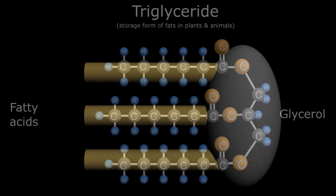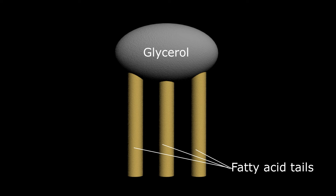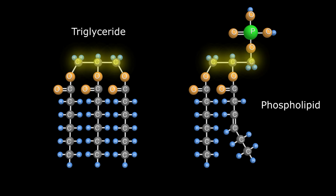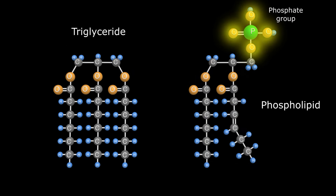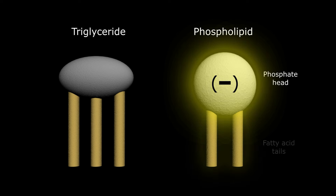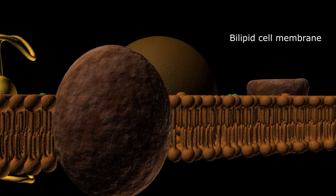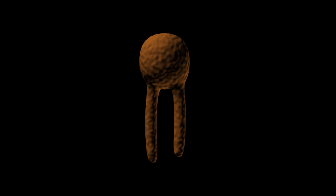This is the way we represent a triglyceride: a rounded head with three branches off the bottom representing those three fatty acids. Now I want to talk about phospholipids — they're very similar to triglycerides. Both have the same glycerol backbone, but the phospholipid only has two fatty acid tails, with the third space occupied by a phosphate group, which has a charge on it. These phospholipids are represented by a little graphic with a charged head and two fatty acids dangling off the bottom. All these phospholipids make up the bilipid layer of every cell membrane in our body.